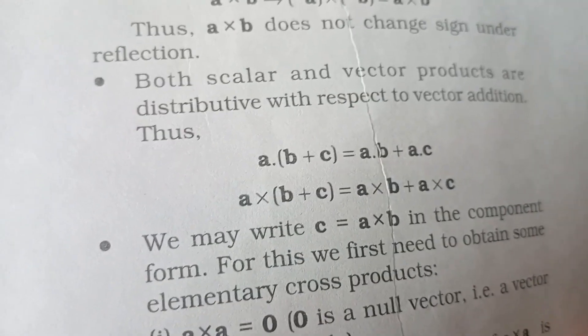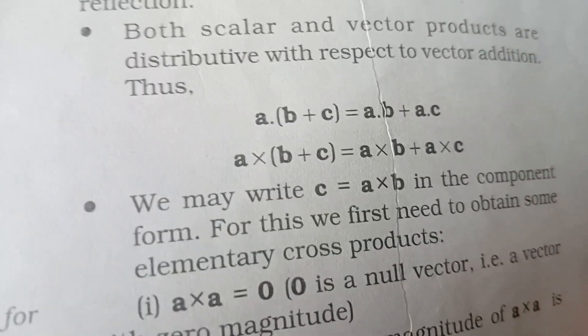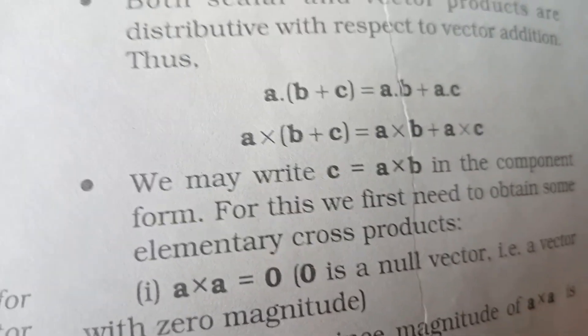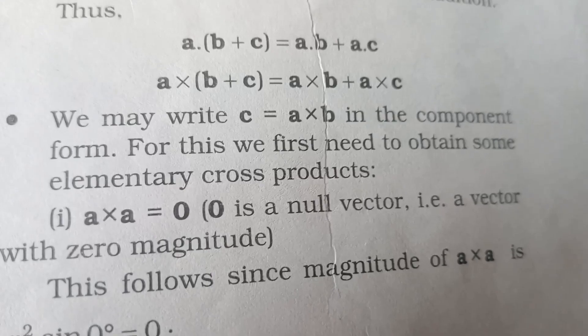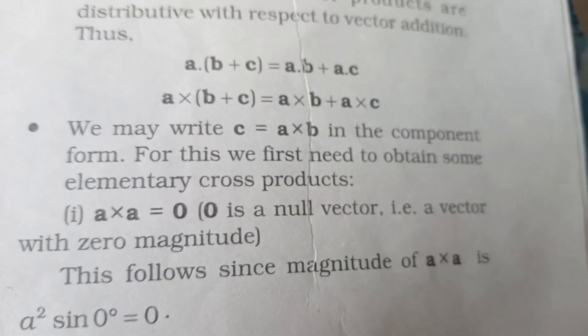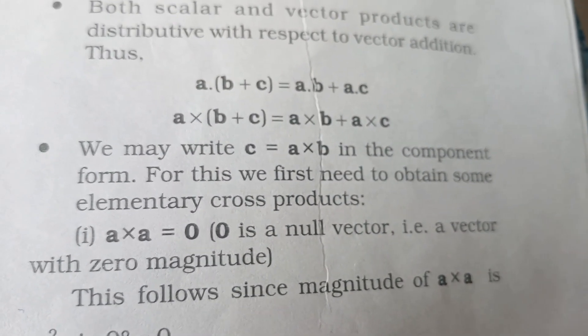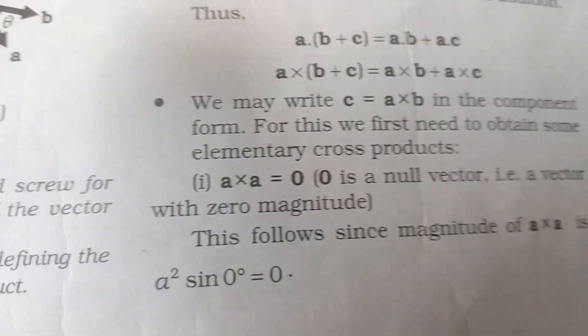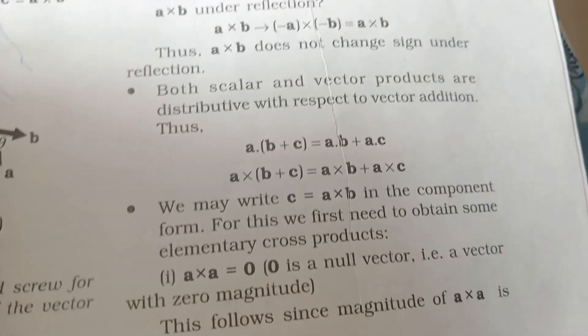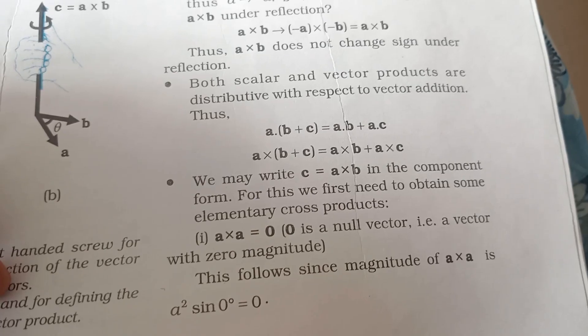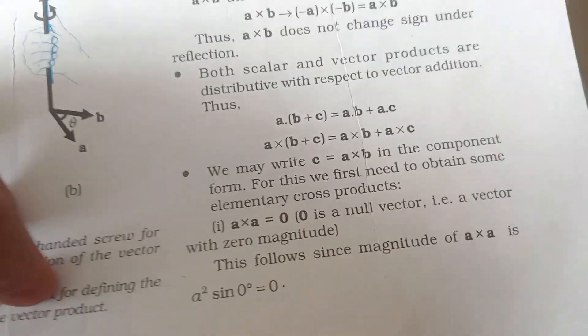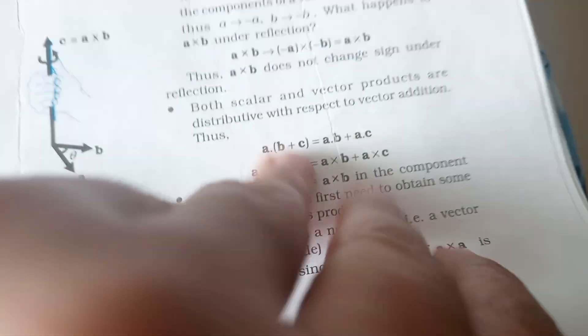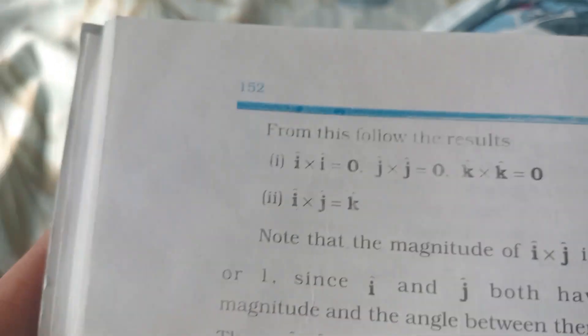Both scalar and vector products are distributive with respect to vector addition. We may write C equals A cross B in component form. First we need to obtain some elementary cross products. A cross A equals zero, which is a null vector with zero magnitude. This follows since magnitude of A cross A is A squared sine zero, and sine zero equals zero.